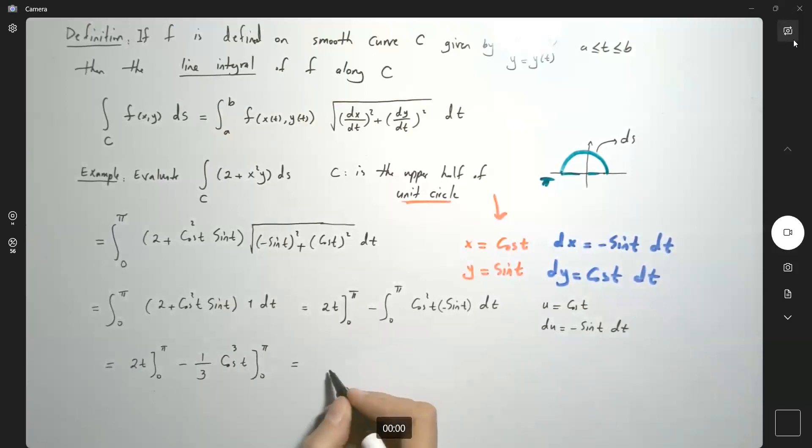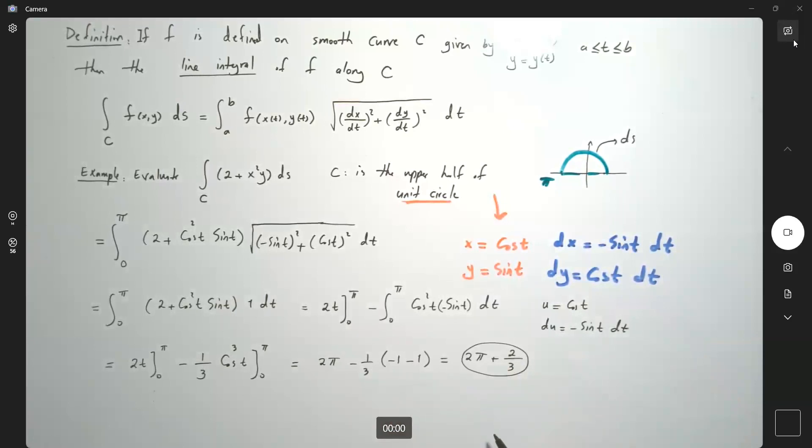So if I plug in π, I get 2π, and evaluating the cosine term with negative one to the third, this becomes 2π plus 2/3. You can use a calculator to approximate, but for the exam you can leave it as is.